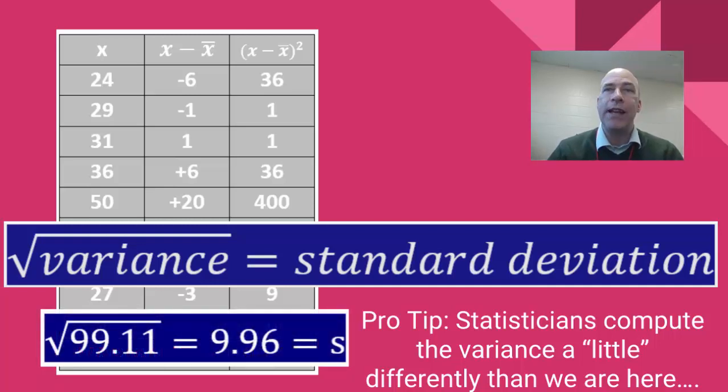And here we can do that. The square root of 99.11 is 9.96. That's the standard deviation. We call that S.